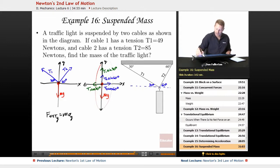So F net y is going to be equal to T1 sine 30 degrees pointing up, plus T2 sine 60 degrees, and I have mg down, minus mg.